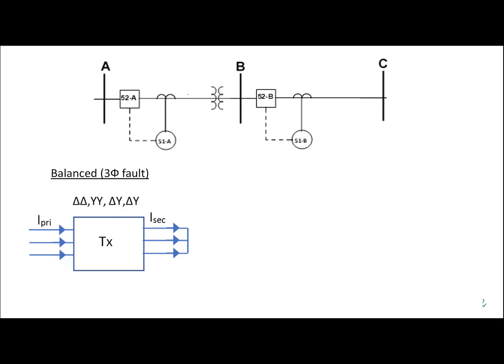Looking at the single line diagram, I'm going to draw and label I_primary and I_secondary. If we have a three-phase bolted fault at bus C, current is going to be flowing from the source to the fault and it's going through the transformer. What we want to do is calculate what the primary current is when the fault is on the secondary side and it's a three-phase bolted fault.